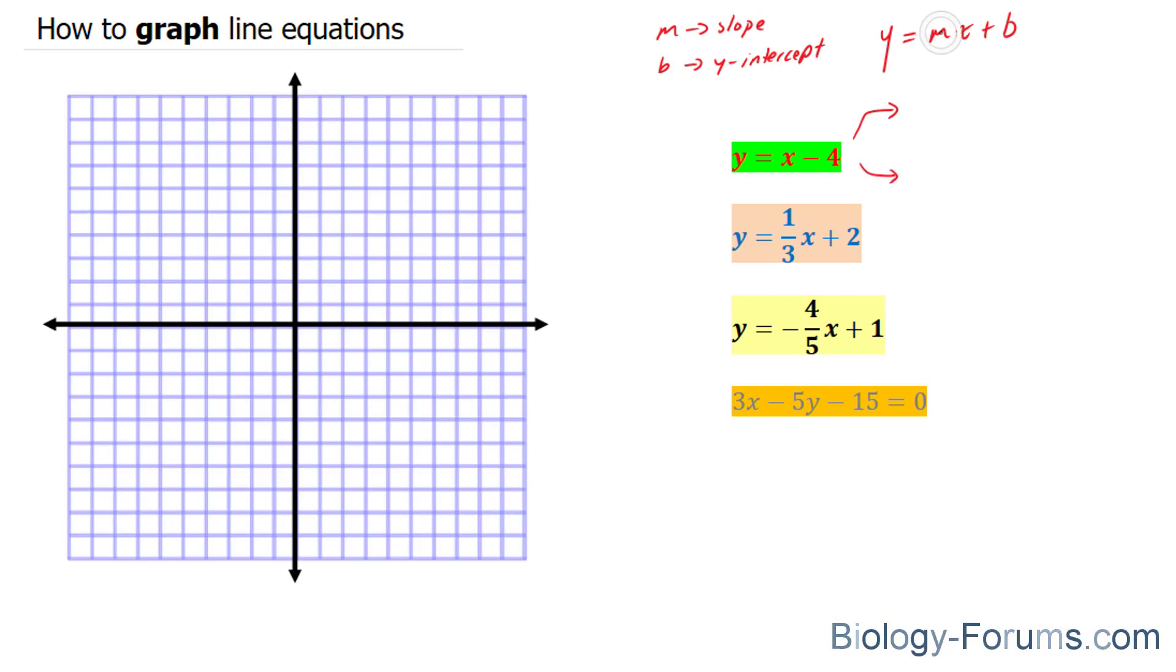Well, m is always right beside the x, or the independent variable, so our m value would be 1. And our y-intercept would be minus 4. Now, let's define our axes here. This will be our y-axis, and this will be our x-axis.